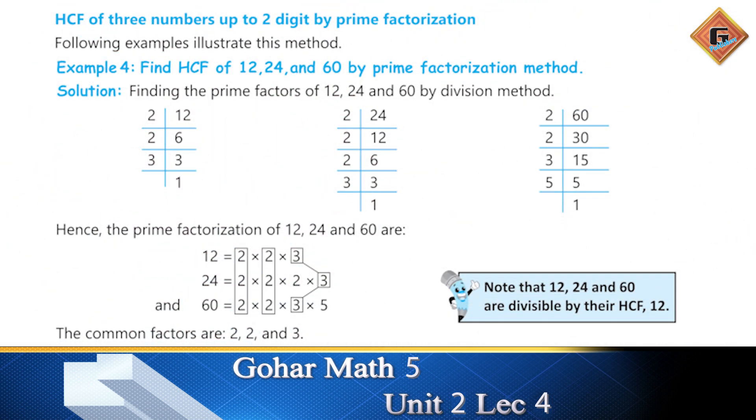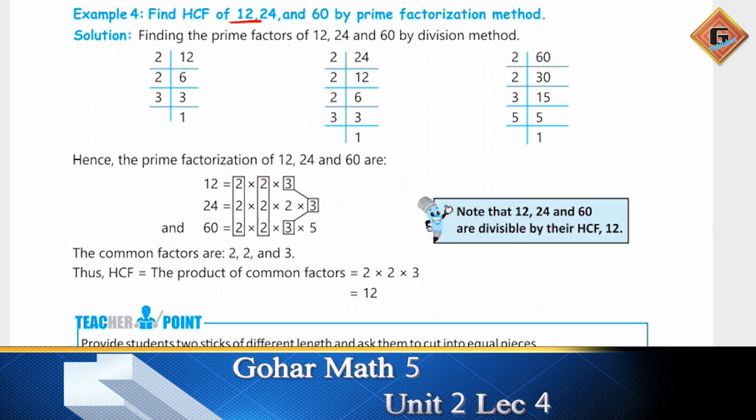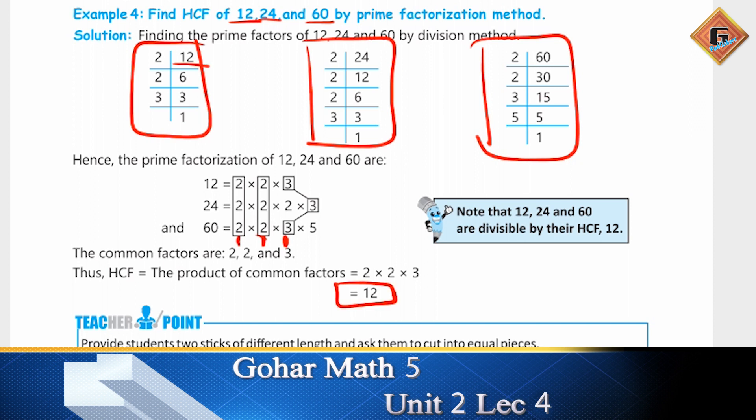Example: Find the HCF of 12, 24, and 60. We find the prime factors of 12, prime factors of 24, and prime factors of 60. The common factors are 2, 2, and 3. Multiply them to get the HCF of 12.